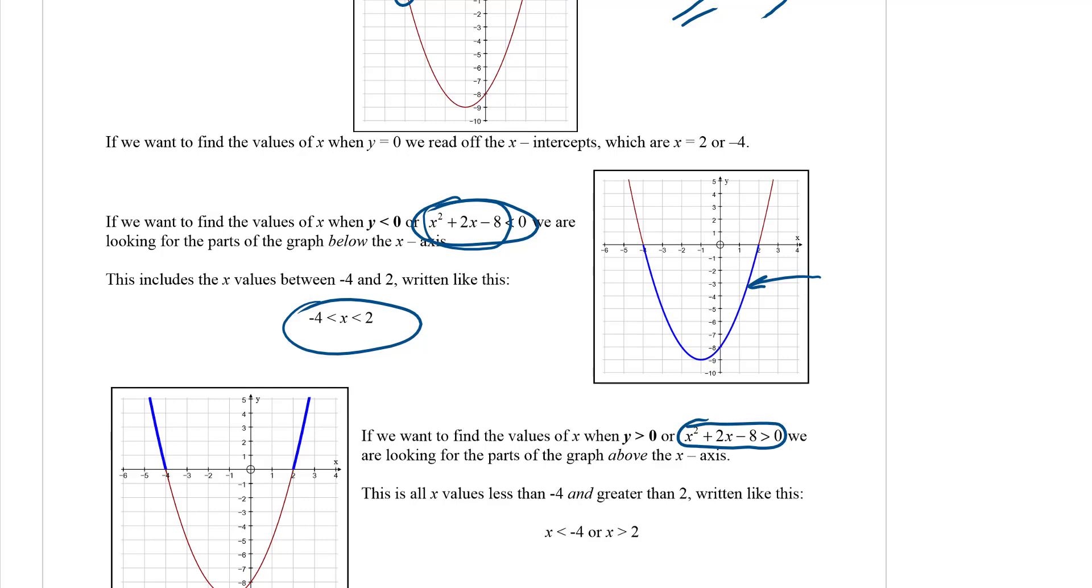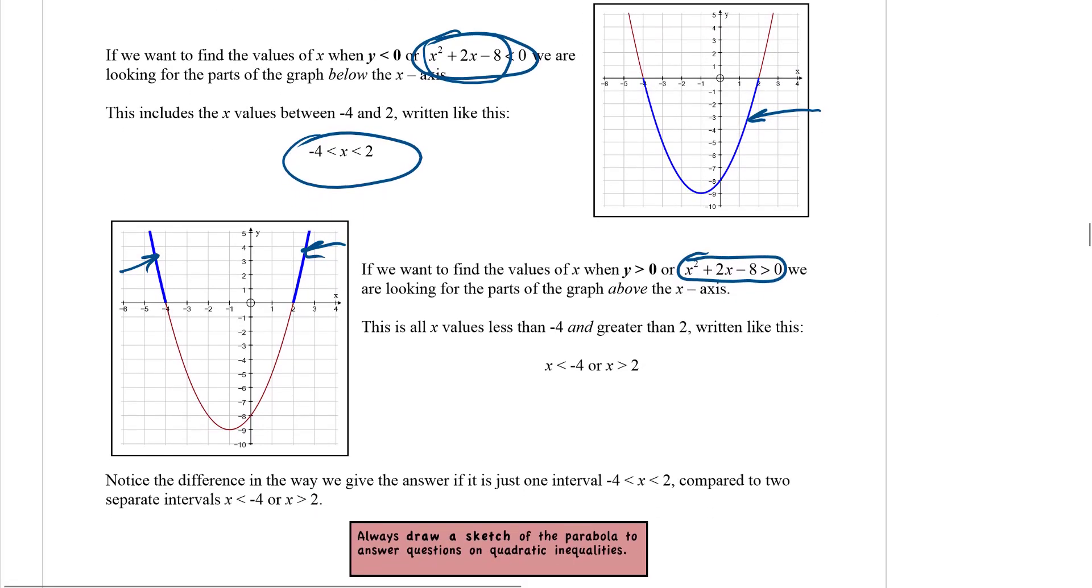Then it would be this part here and this part here. We'd say x is less than negative 4 or x is greater than 2. So that's in two parts there, whereas this one up here was just in one part.